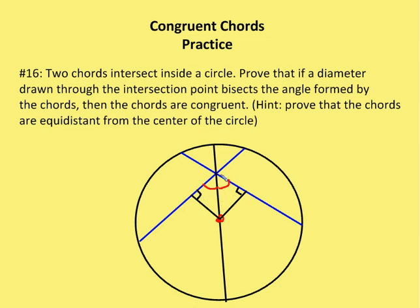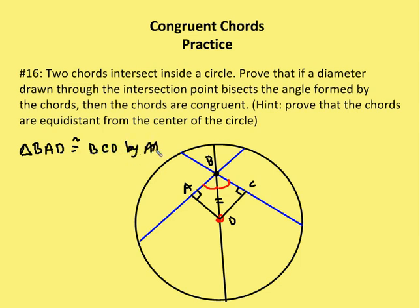I also know that this distance — BD — is congruent to itself by the reflexive property. So by angle-angle-side, triangle BAD is congruent to triangle BCD by AAS. We want to prove that the diameter drawn through the intersection point bisects the angle formed by the two chords, and that the chords are congruent.